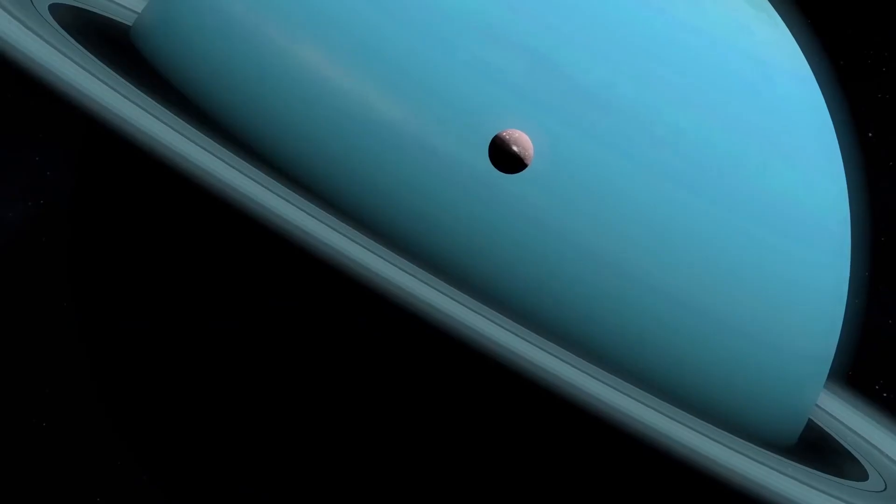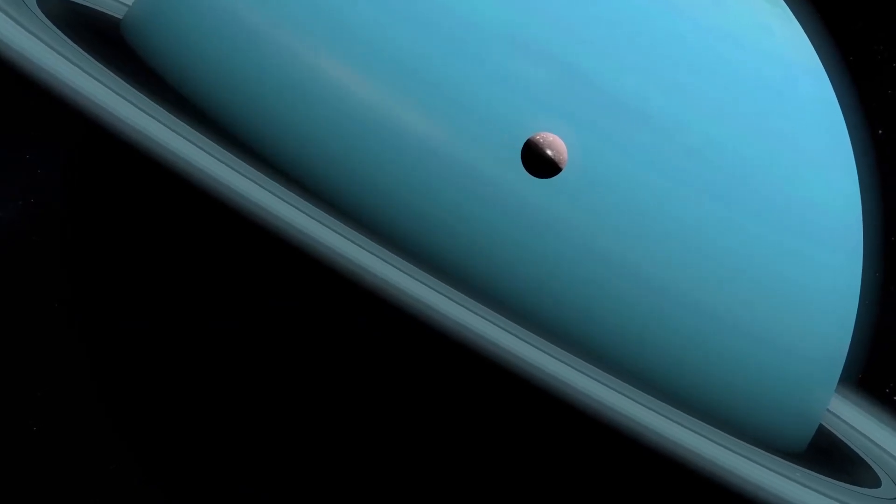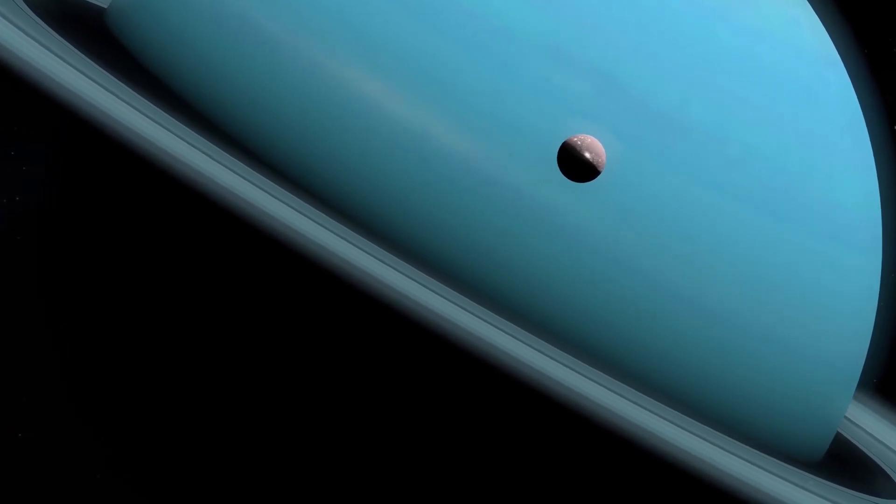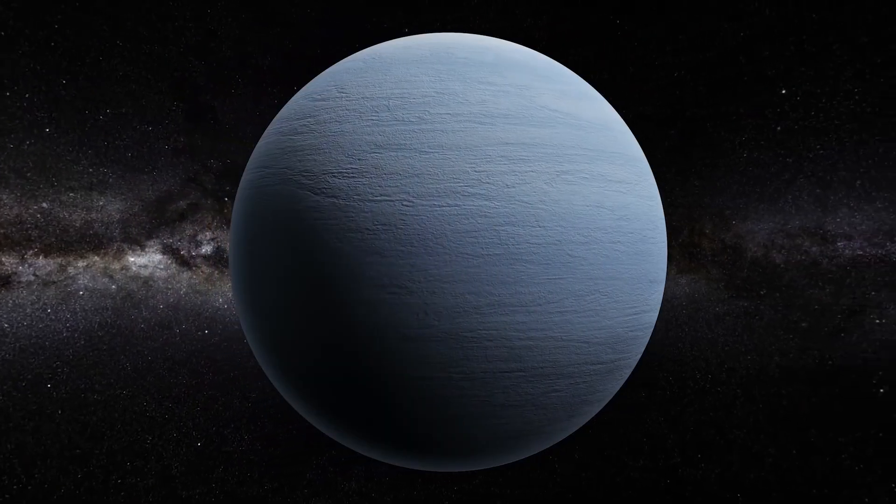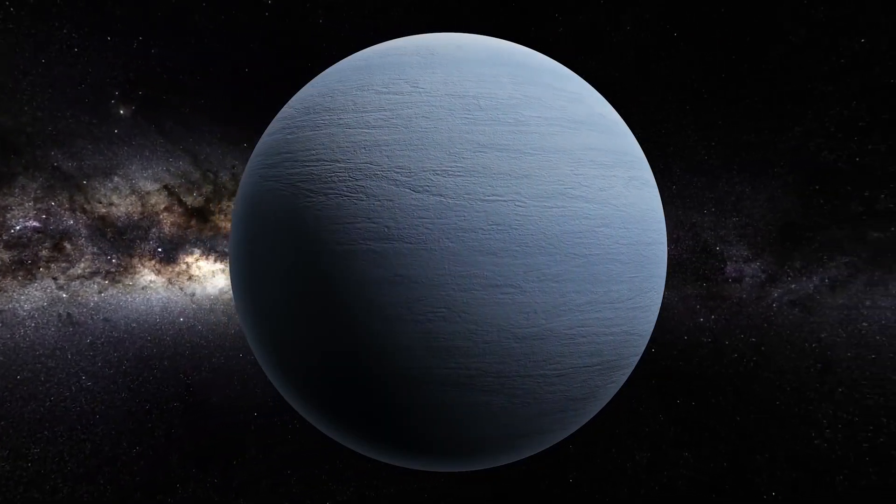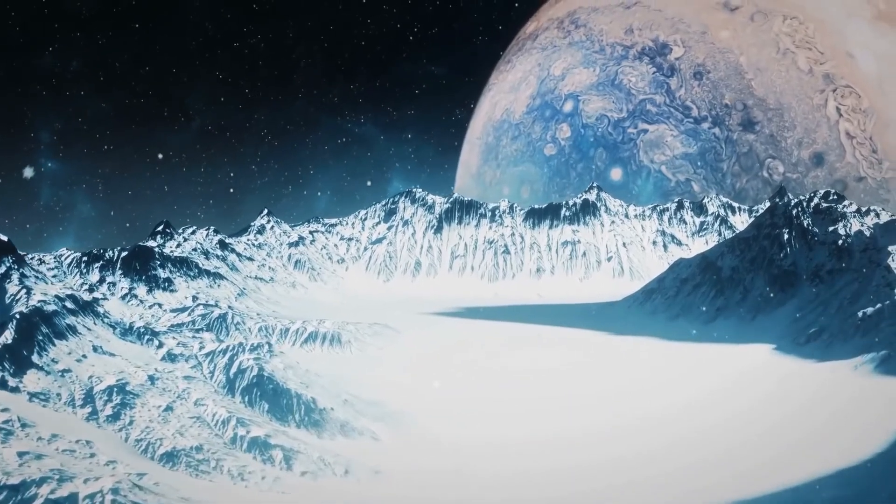Isolation: Neptune is over 4 billion kilometers (about 2.5 billion miles) away from Earth. Any human-made spacecraft traveling to Neptune would require a long journey and face numerous challenges related to life support, radiation protection, and propulsion.